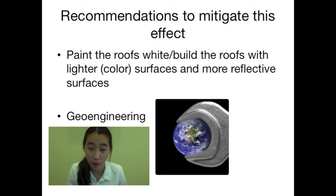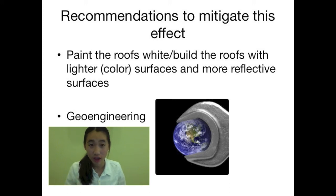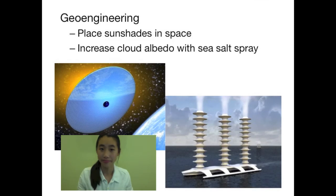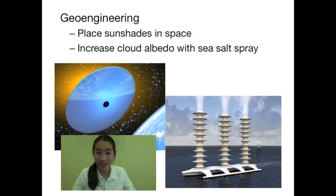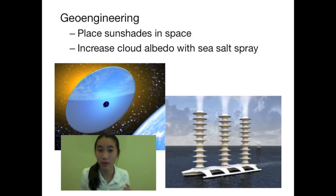Next, we have geoengineering — this basically means a large-scale change that attempts to correct environmental problems. One geoengineering solution is to place sun shades in space, which would reflect some of the incoming solar radiation even before it enters Earth's atmosphere.